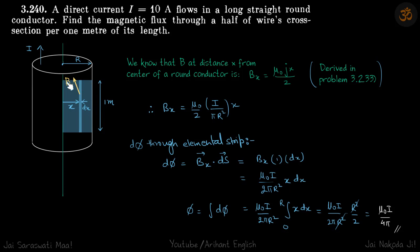We are supposed to find the flux crossing this if the length is given as one meter. B inside this conductor will vary. At the center it will be zero and as you go out it will increase. So B is not constant.